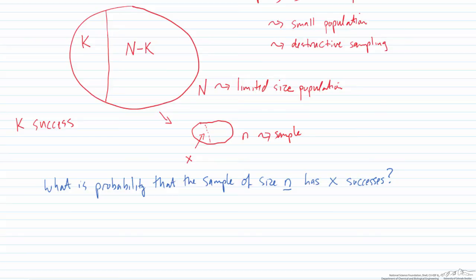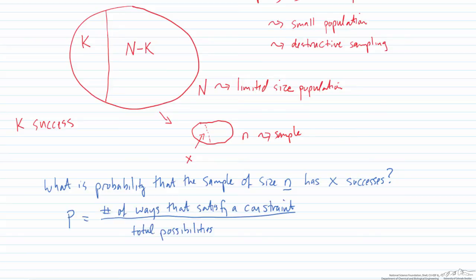This is used a lot in product testing. To start the derivation of the hypergeometric probability function, note that n is set by the user and x is chosen, but the function is a function of x. The probability of having x successes in a sample of size n equals the number of ways that satisfy a particular constraint divided by the total possibilities.